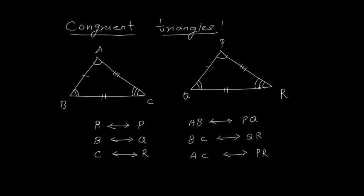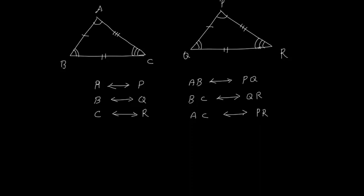So under this correspondence: A corresponds to P, B corresponds to Q, C corresponds to R. Side AB corresponds to side PQ, side BC corresponds to side QR, and side AC corresponds to side PR. Under this correspondence, triangle ABC is congruent to triangle PQR. That means if I put one triangle over the other, they are going to overlap each other completely.